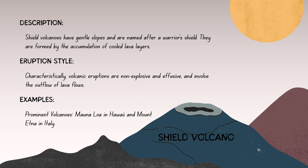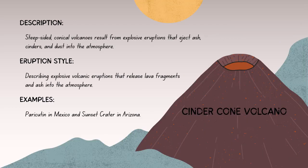Shield volcanoes tend to have relatively frequent but non-explosive eruptions. The lava flows are not very viscous, allowing for a steady release of pressure. Prominent examples include Etna in Italy and Mauna Loa in Hawaii.